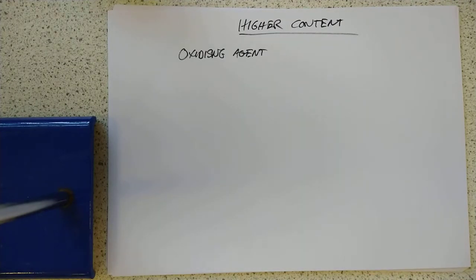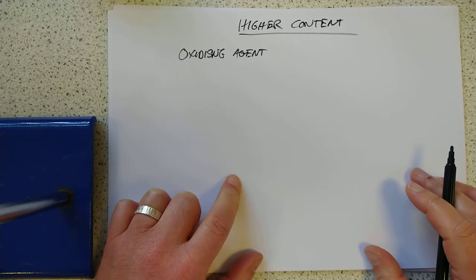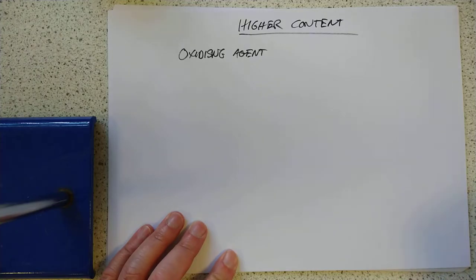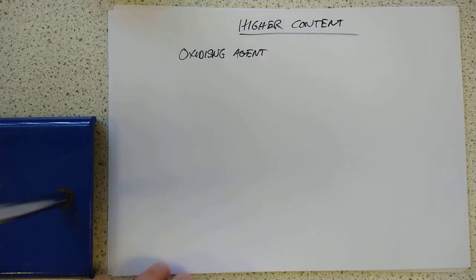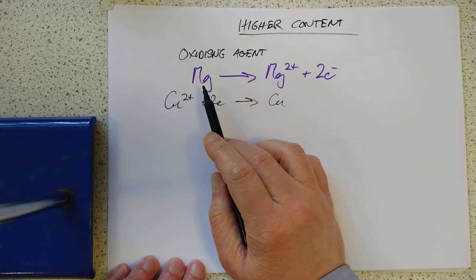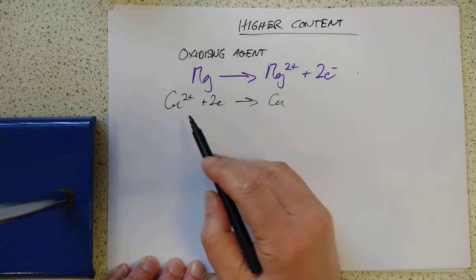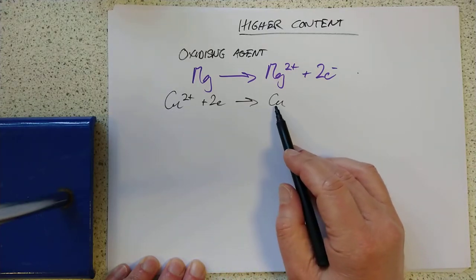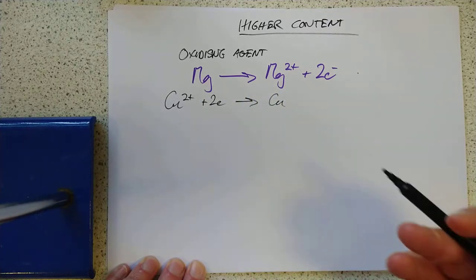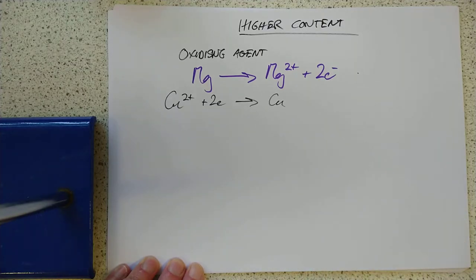That's basically N5 recap, guys. Quick definitions of OIL RIG. A better way to recognize reductions and oxidations. And also, squashing together an oxidation and a reduction by equaling up the number of electrons. Okay, newer content, then, guys, for Higher. These things called agents - oxidizing or reducing agents. What are they about?